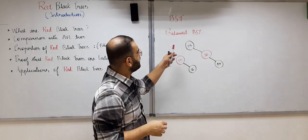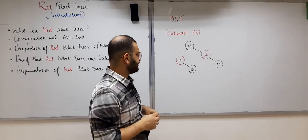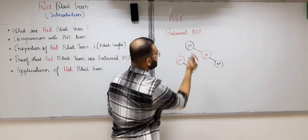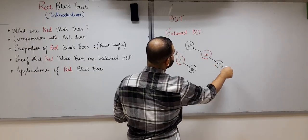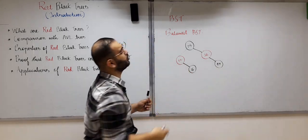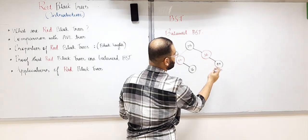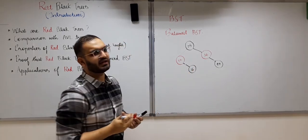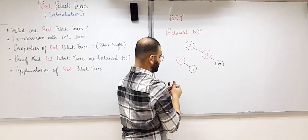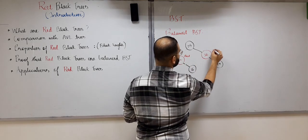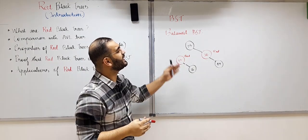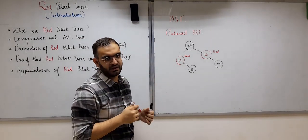For example, this is a red-black tree. As you can see, each and every node follows the binary search property — the root is 25, all nodes on the right are greater than 25, and on the left subtree all nodes are lesser than 25. Same for 36 and 12. So this is a binary search tree and every node also has a color assigned to it — these nodes are red and the rest are black.